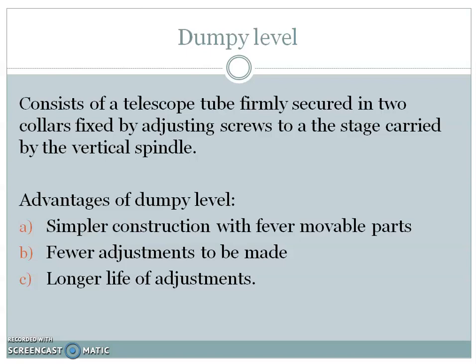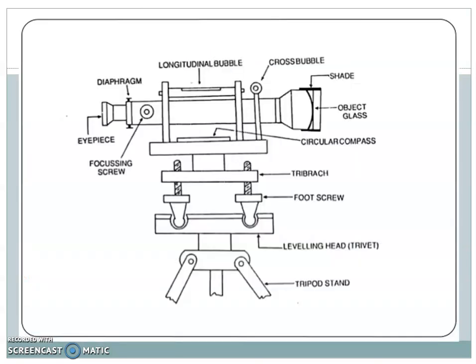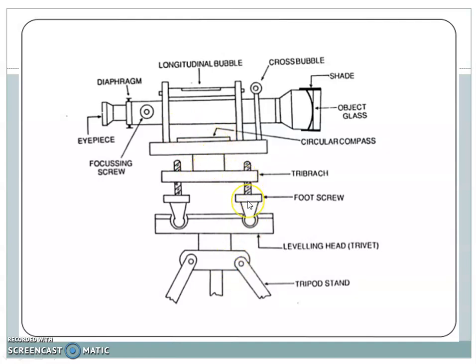The dumpy level consists of a telescope tube firmly secured in two collars fixed by adjusting screws to a stage carried by the vertical spindle. Its advantages are simpler construction with fewer movable parts, fewer adjustments to be made, and longer life of adjustments. In the cross-section diagram, you can see the telescope, the eyepiece from where we sight the object, the object glass, the longitudinal bubble which must be adjusted, the focusing screw, the diaphragm, and the foot screws attached to the tripod. The foot screws are used to level the instrument, and then we carry out the experiment.